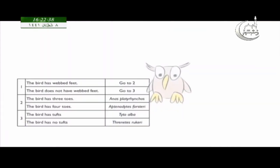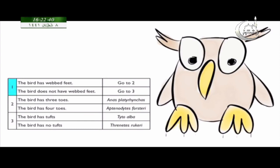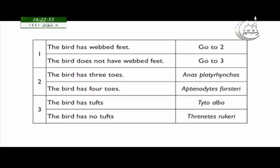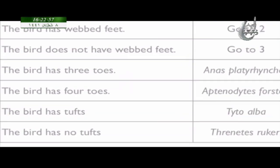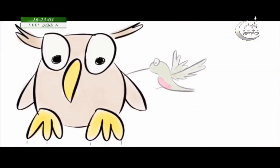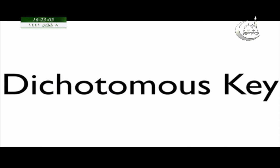Lastly, an owl. Always start at number one on the dichotomous key and look at the features of the organism. Our bird has tufts — this is its scientific name. Dichotomous keys are charts that scientists use to figure out the scientific name of organisms or to help identify footprints.